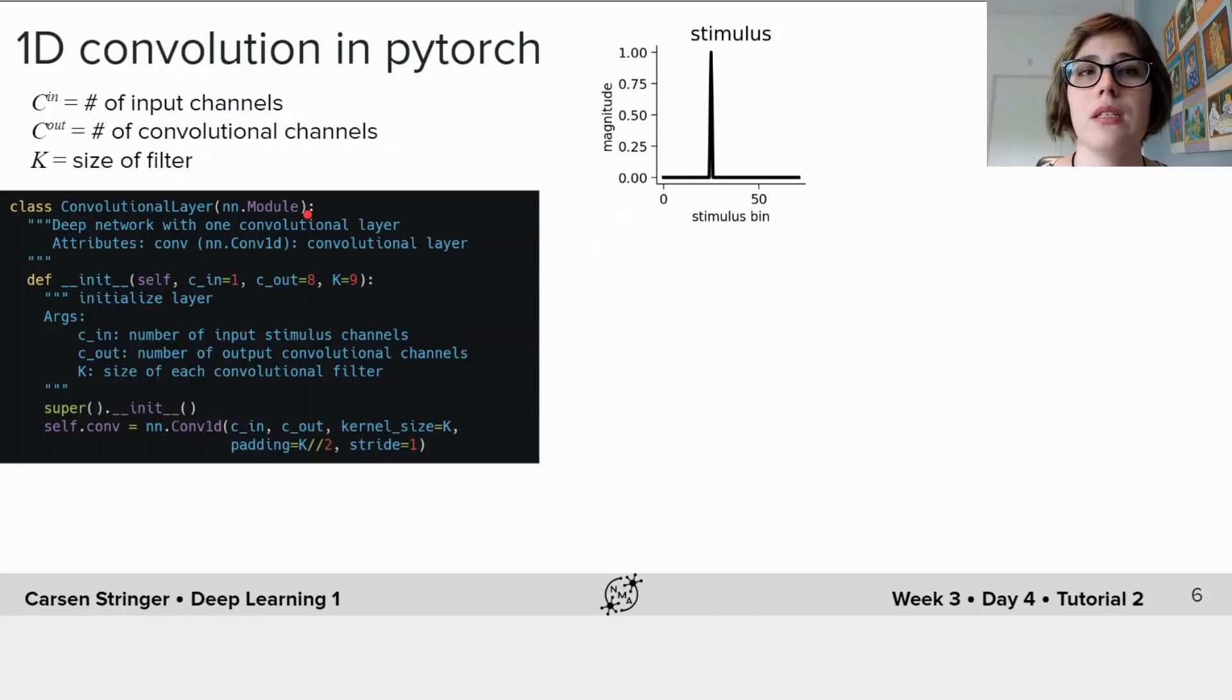So now we're going to declare our convolutional layer using an nn.conv1d object which takes the input channels, the number of output channels which is the number of convolutional channels we'll create, the kernel size, and then also the padding.